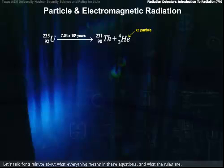Let's talk for a minute about what everything means in these equations and what the rules are. The 92 sitting next to the symbol for uranium is the charge of the nucleus. In this case, it's the atomic number, 92 protons.